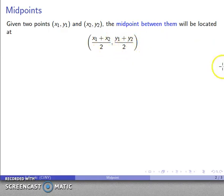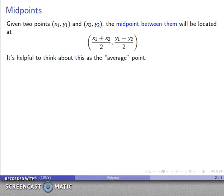And if you look at this formula, in some sense what we're doing is we're taking the average of the x coordinates, we're taking the average of the y coordinates, and that's going to locate the midpoint. So it's helpful to think about the midpoint as being our average point.